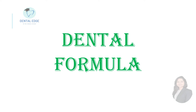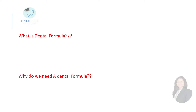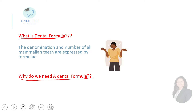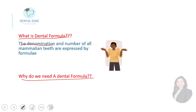We will also learn the dental formula for human dentition. The denomination — meaning the name or title of the tooth, what type of tooth it is — and the number of all mammalian teeth are expressed by a formula, and this formula is called a dental formula. So the type of tooth and how many of these teeth are present in mammals is expressed by a dental formula.